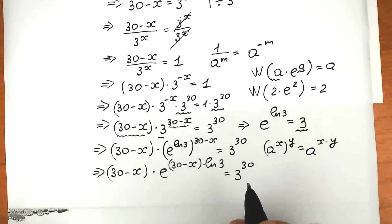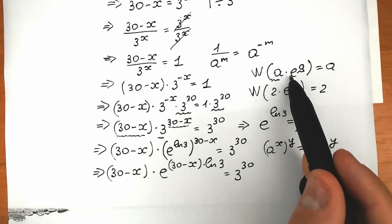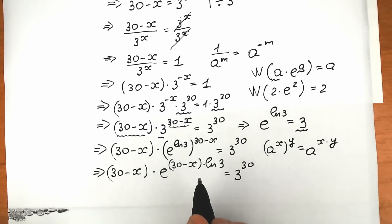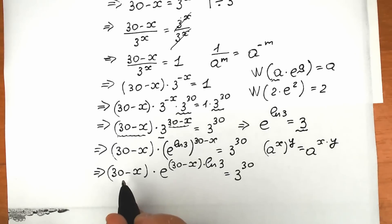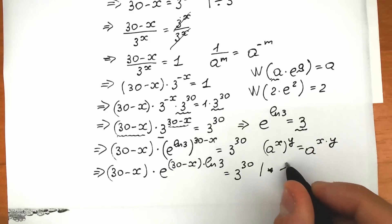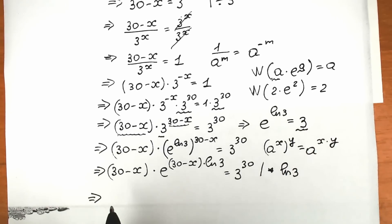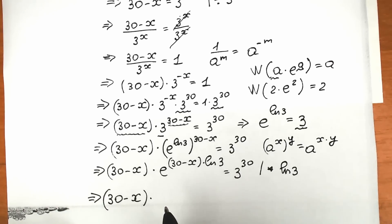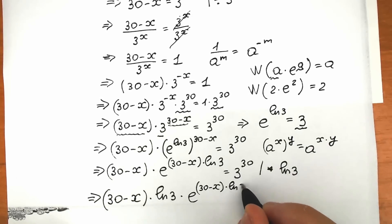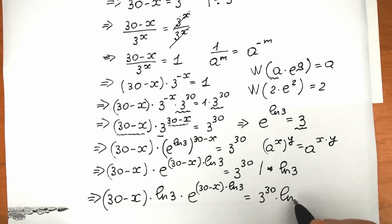Look closely — before e we have 30 minus x, but the exponent is 30 minus x times natural log 3, so they're not the same yet. To fix this, let's multiply both sides by natural log 3. On the left we get: (30 minus x) times natural log 3 times e to the power [(30 minus x) times natural log 3], and on the right: 3 to the power 30 times natural log 3.